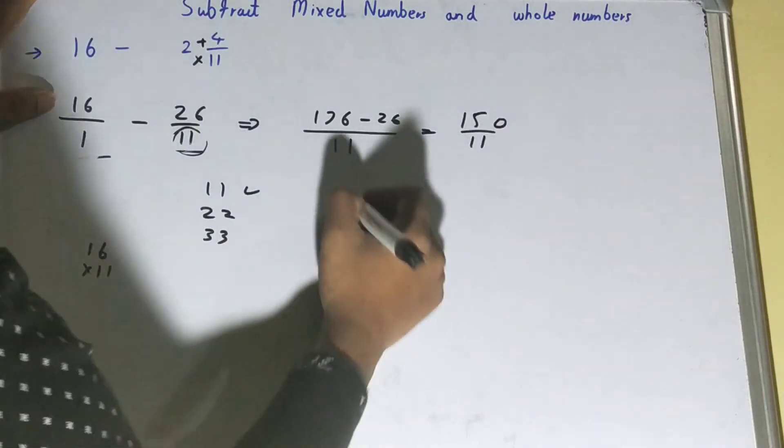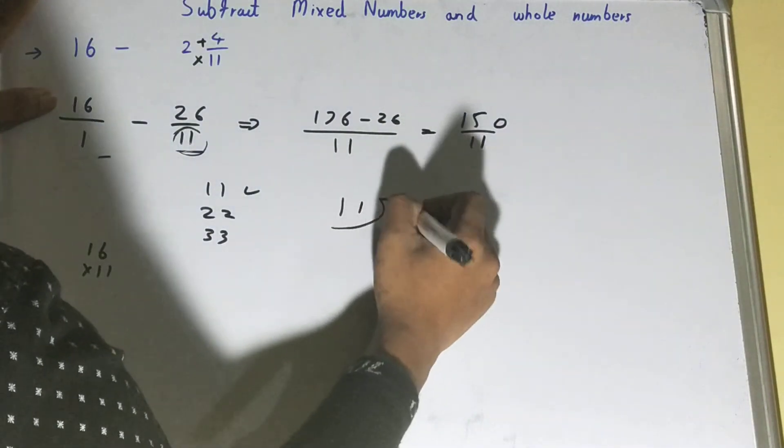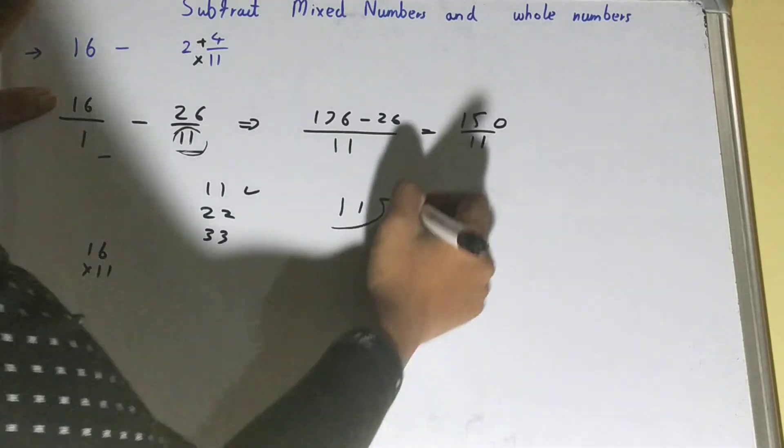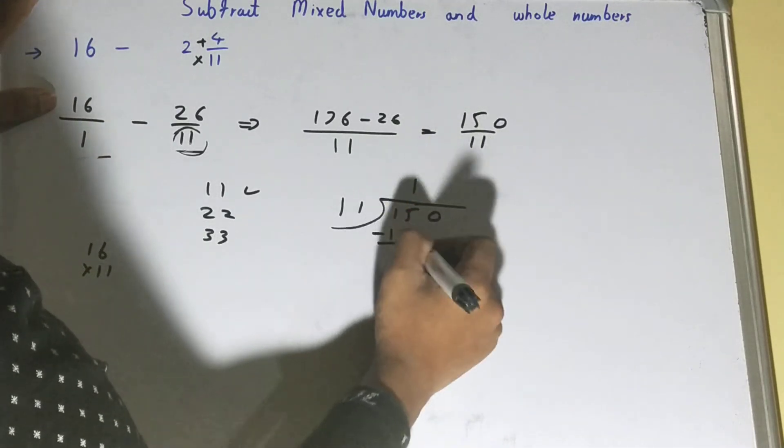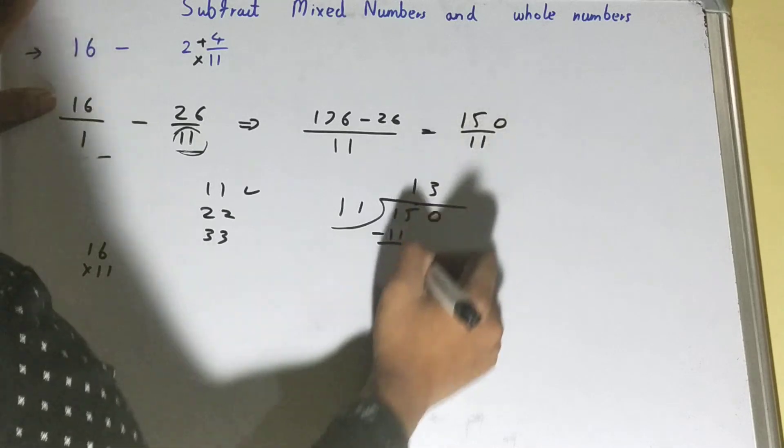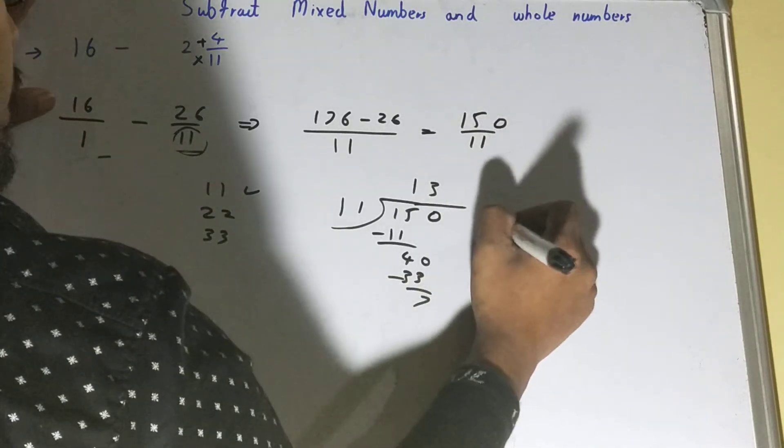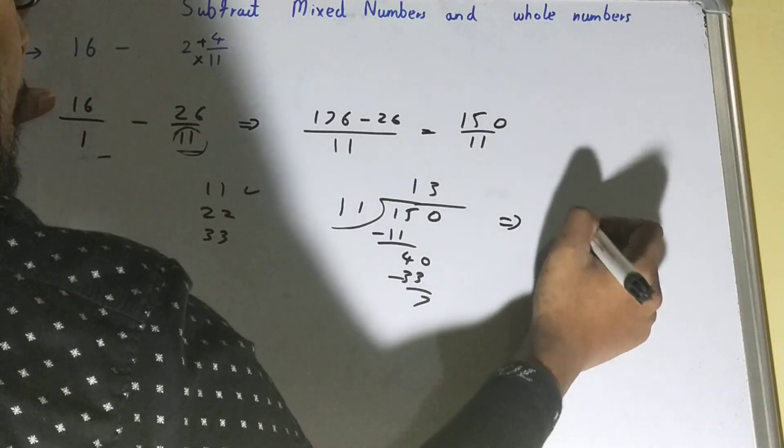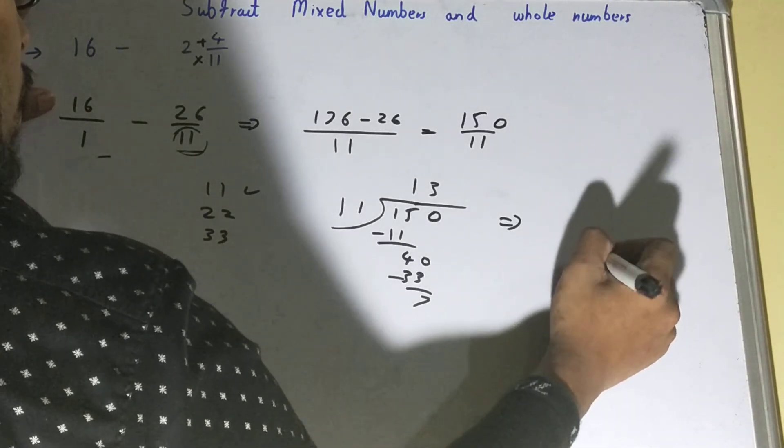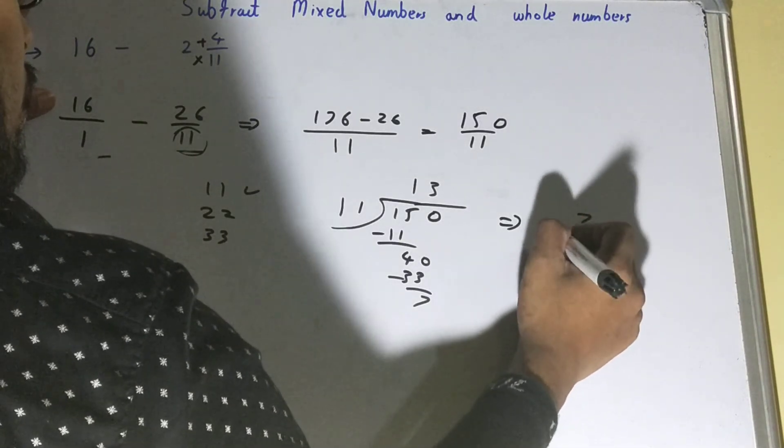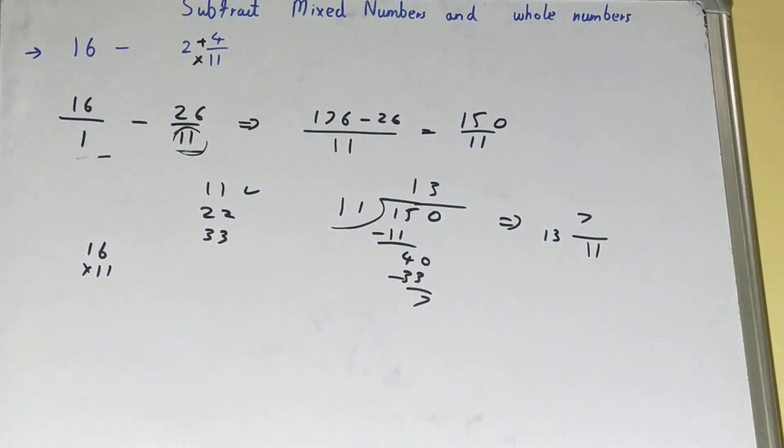And now again you can write it in a mixed fraction form. 11 into 13 is 143. 150 minus 143 is 7. So it will be 13 and 7/11. That will be our final answer.